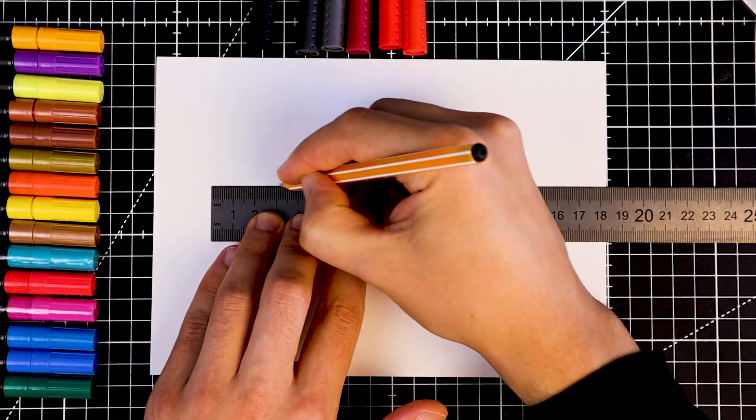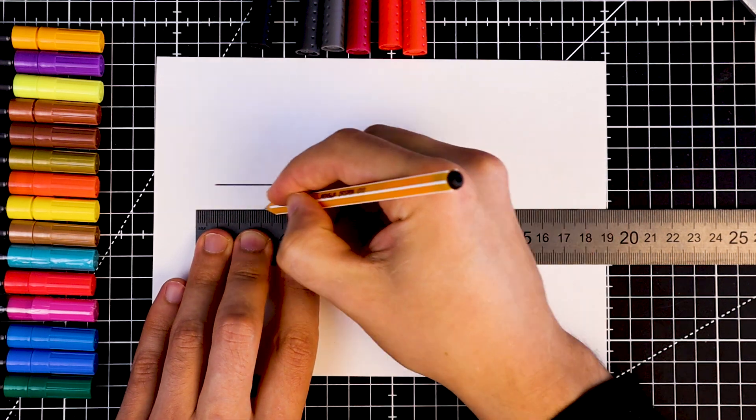First, sketch two straight lines using a ruler. The top one should be longer, the lower shorter.